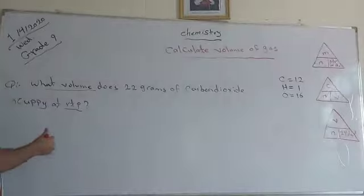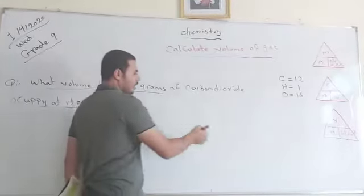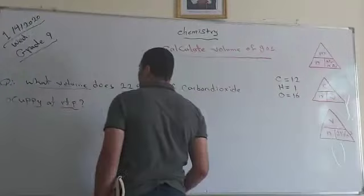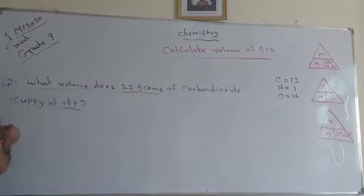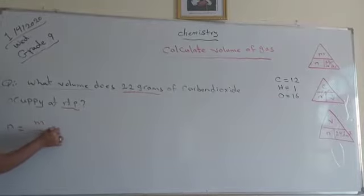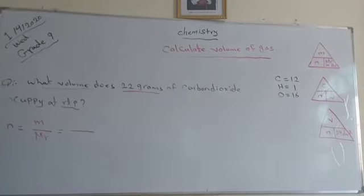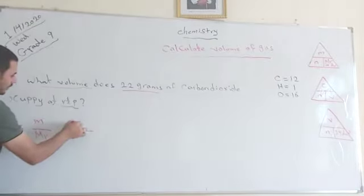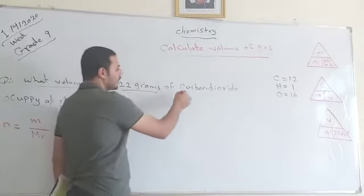But here he gave us grams and we need to find the number of moles. From the other formula, N equals M over MR. So M is 22 grams. MR - he asked for carbon dioxide.